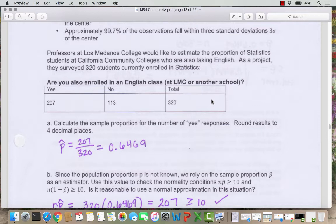So here is data from a survey at LMC. Professors at LMC would like to estimate the proportion of statistics students at California community colleges who are also taking English. As a project, they surveyed 320 students currently enrolled in statistics. We'll assume they were surveying students who attended different community colleges than just LMC.